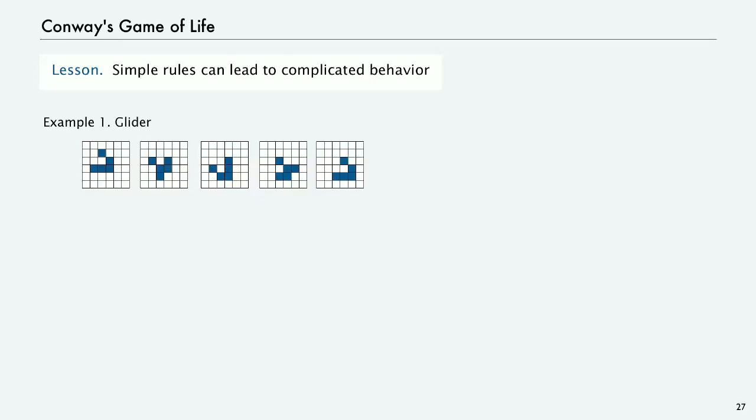And after one, two, three, four steps, the thing has the same form, but it moves. It moves down through the grid. And again, it's infinite in all directions. So, if you get that configuration, it'll move.